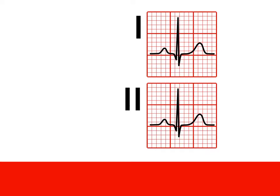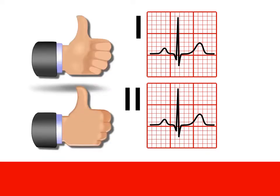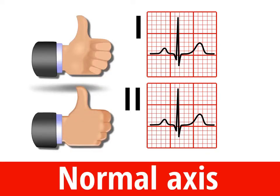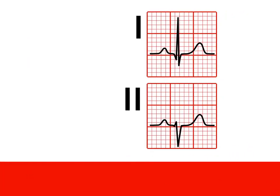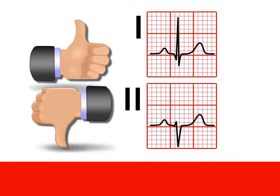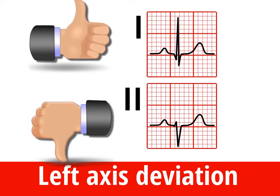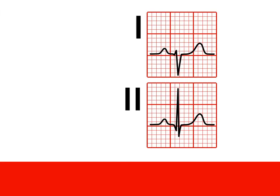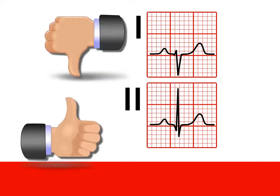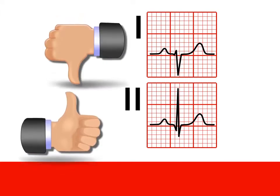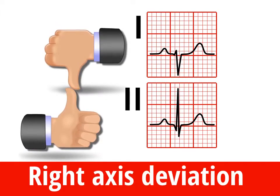If leads 1 and 2 are both positive, that's 2 thumbs up and the axis is normal. If lead 1 is positive but lead 2 is negative, your thumbs have left each other and that's left axis deviation. If lead 1 is negative and lead 2 is positive, your thumbs are heading right for each other and that's right axis deviation.